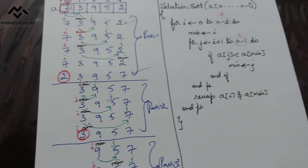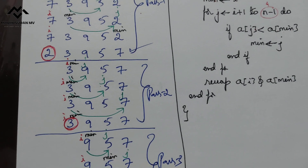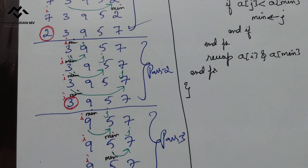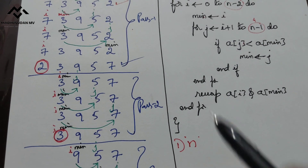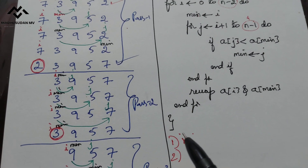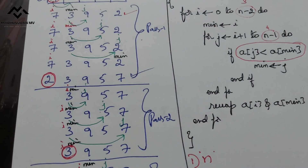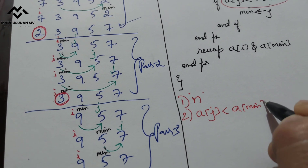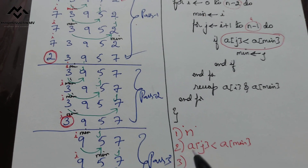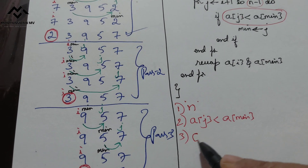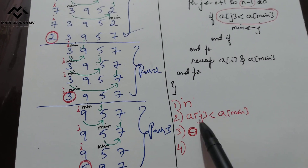Now we will do analysis. The first step is identifying the problem size — here the number of elements to be sorted is the problem size. The second step is identifying the basic operation: the comparison operation, a[j] less than a[min], is the basic operation. Third step: the number of times this basic operation executes depends only on the problem size, so we need to find only the average case.